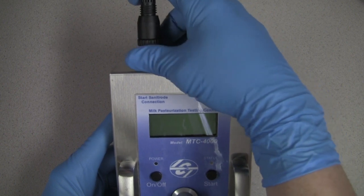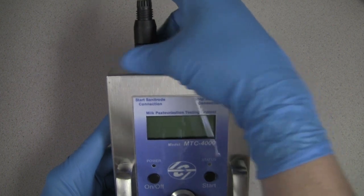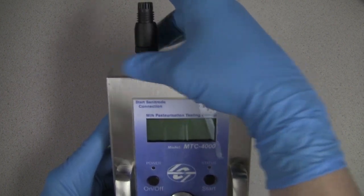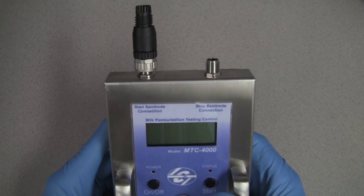You will then apply firmer pressure while turning the stainless steel outer metal ring clockwise to tighten it down into the MTC4000. Once it's snug, the connection is good.